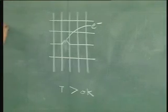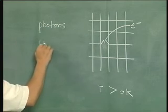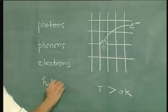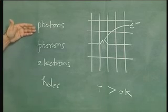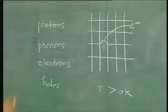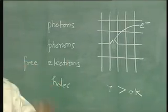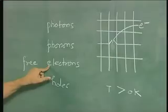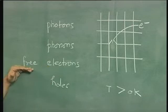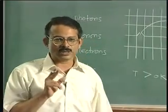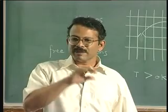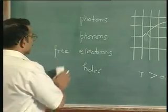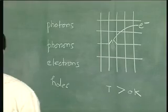So there are four types of particles: photons, phonons, electrons, and holes. It is to be understood that when I write electrons here I mean free electrons. Anywhere in the crystal electrons are present; the question is only whether they are free or not. Free electrons are those which are not attached to any single atom — they can move anywhere within the crystal but cannot move out of the crystal. When you talk of electrons as carriers, normally the word 'free' is dropped; it is to be understood that they are all free electrons.